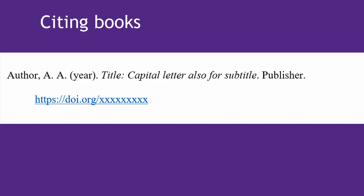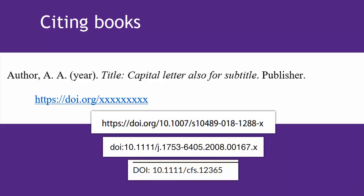When citing a book, you need to find the following information: the name of the author, date of publication, title of the book, publisher, and DOI if it has one. DOI stands for Digital Object Identifier and it's very important for citing lots of things in APA. It's a long string of numbers and letters that is unique to only this one work. Here are a few examples of what DOIs in books might look like. You'll sometimes see them in newer print books, but they're most common in ebooks.